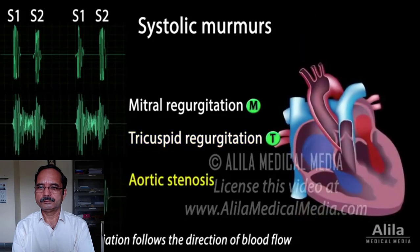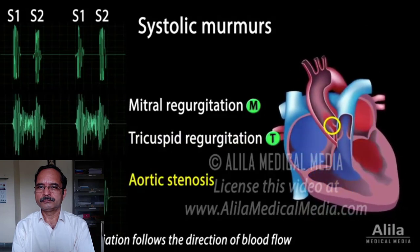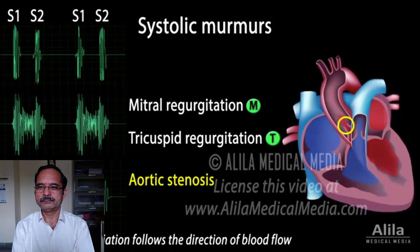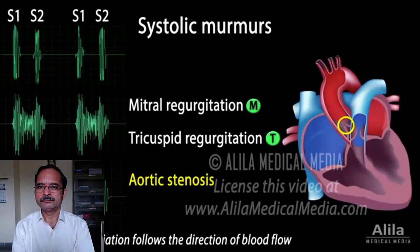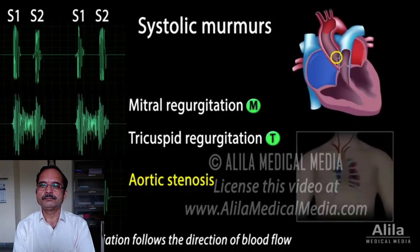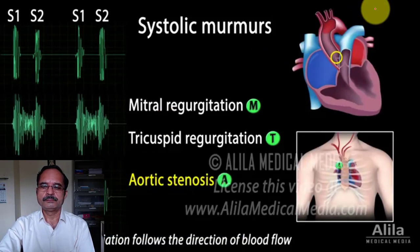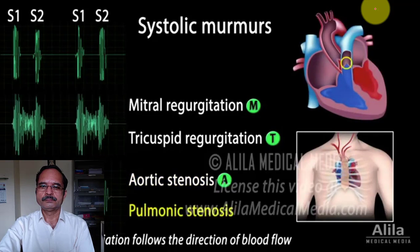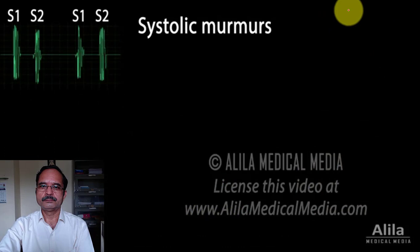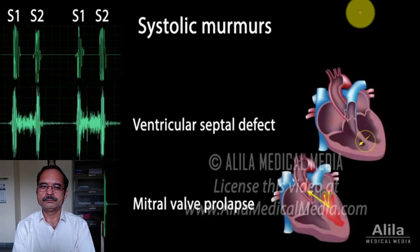Aortic valve stenosis: when the aortic valve does not open properly and blood is forced through a narrow opening, blood flow starts small, rises to a maximum in mid-systole at the peak of ventricular contraction, then attenuates toward the end of systole. This results in a crescendo-decrescendo, or diamond-shaped murmur, starting a short moment after S1, often preceded by an ejection click. Aortic stenosis is loudest in the aortic area and radiates to the carotid arteries. Pulmonic stenosis has the same characteristics but is best heard in the pulmonic area and does not radiate to the neck. Other conditions causing systolic murmurs include ventricular septal defect and mitral valve prolapse.